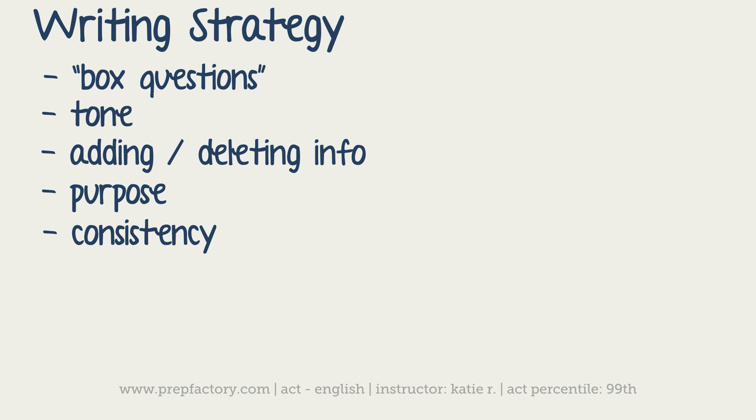Because we're going to have to look at a passage in order to fully examine these. Because the questions themselves, you need a passage in order to deal with them. So, the first thing would be tone. A tone question would say something like, the author wants to inject a little humor into this passage at this point. Which of the following choices, if true, would best accomplish that? So, you're going to have to look through the answer choices and say, okay, which of these is relevant? Because everything you pick is going to have to be relevant to the passage. And also, which one is funny? So, you're going to add something that's relevant and funny in that sort of situation.